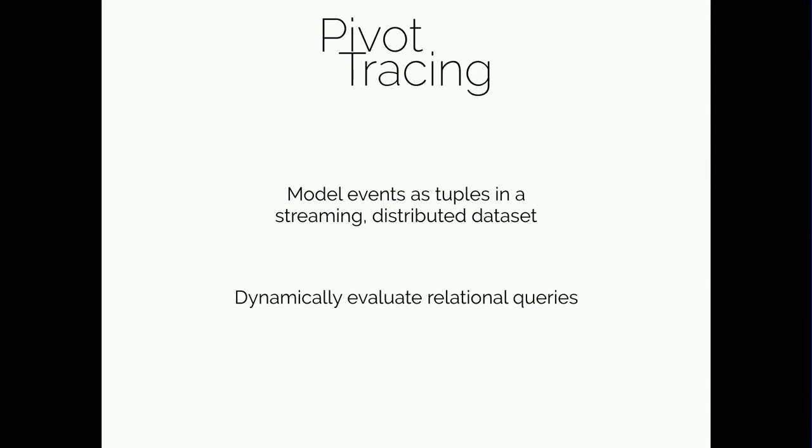Given those challenges, Pivot Tracing combines two techniques. First, we use dynamic instrumentation to defer until runtime our choices about what we want to monitor. Second, we use a generalized form of context propagation that we call baggage, which lets us combine information at runtime from different points in the system along that cross-cutting dimension. I'll revisit baggage in just a moment, but first I'll introduce the high-level lens through which Pivot Tracing abstracts the task of system monitoring.